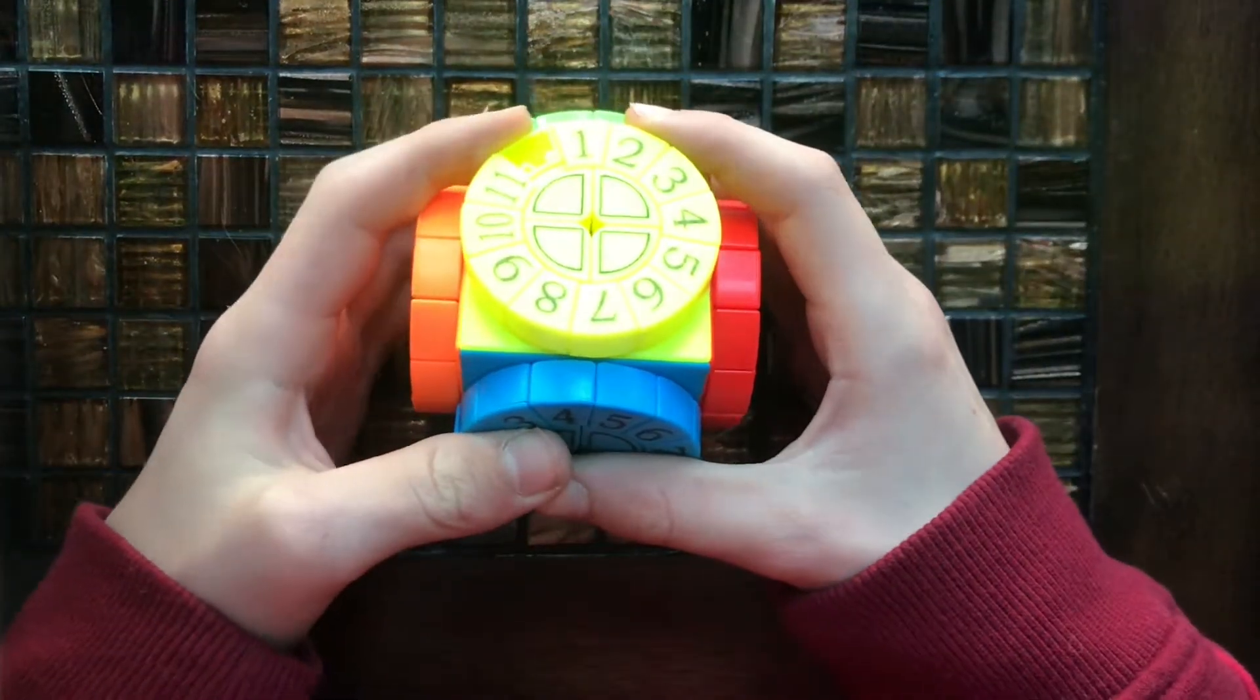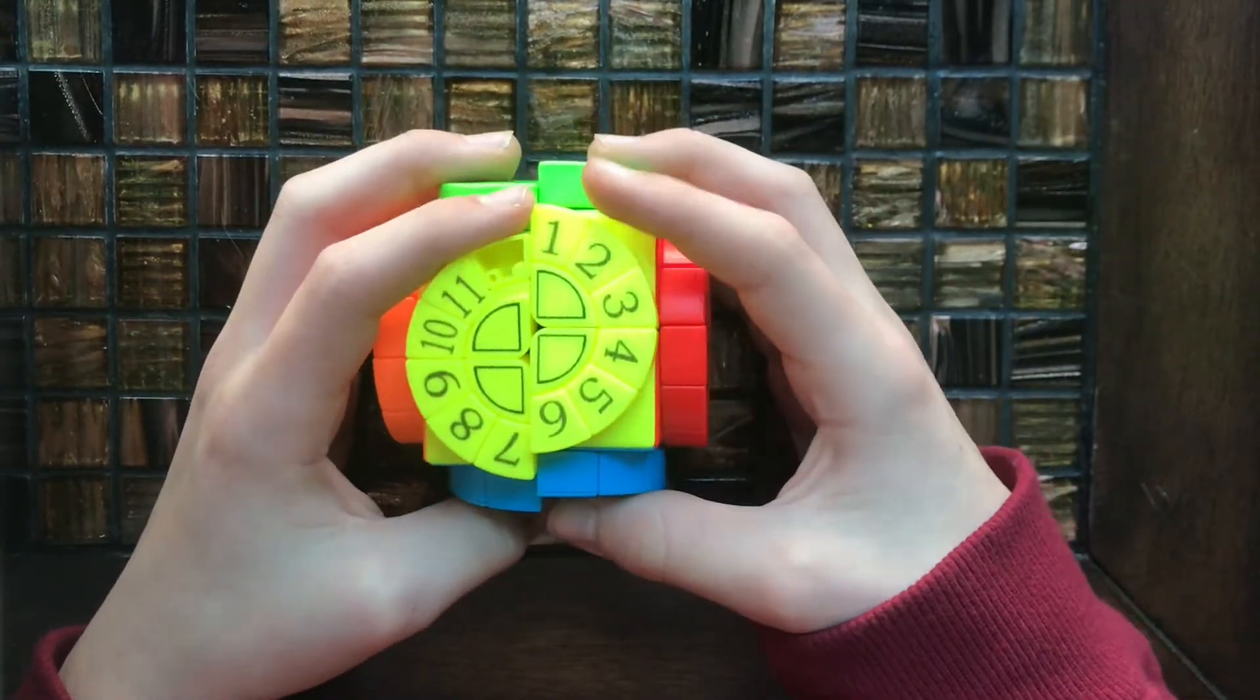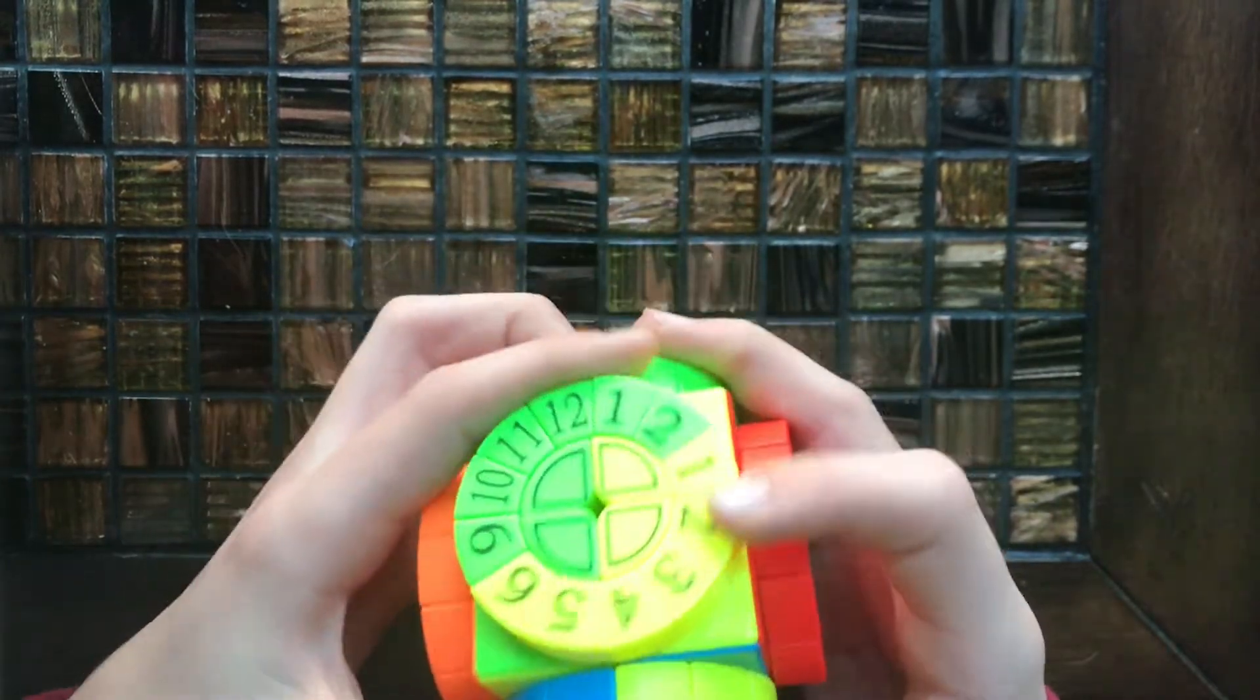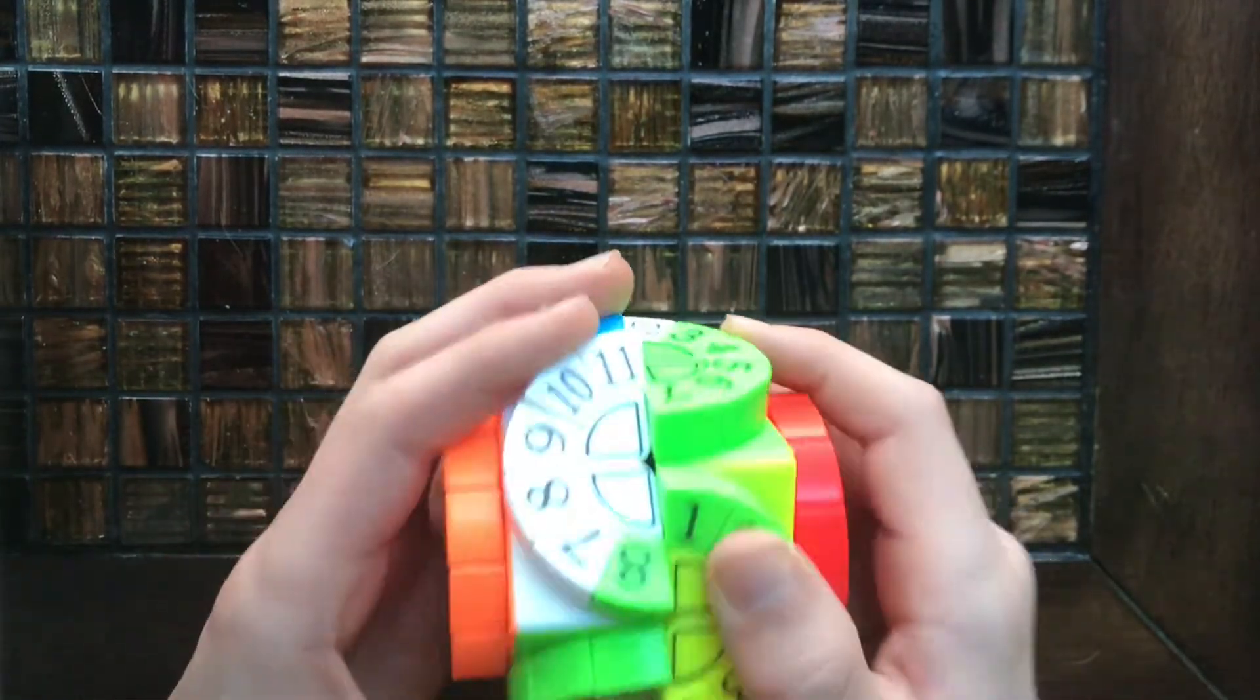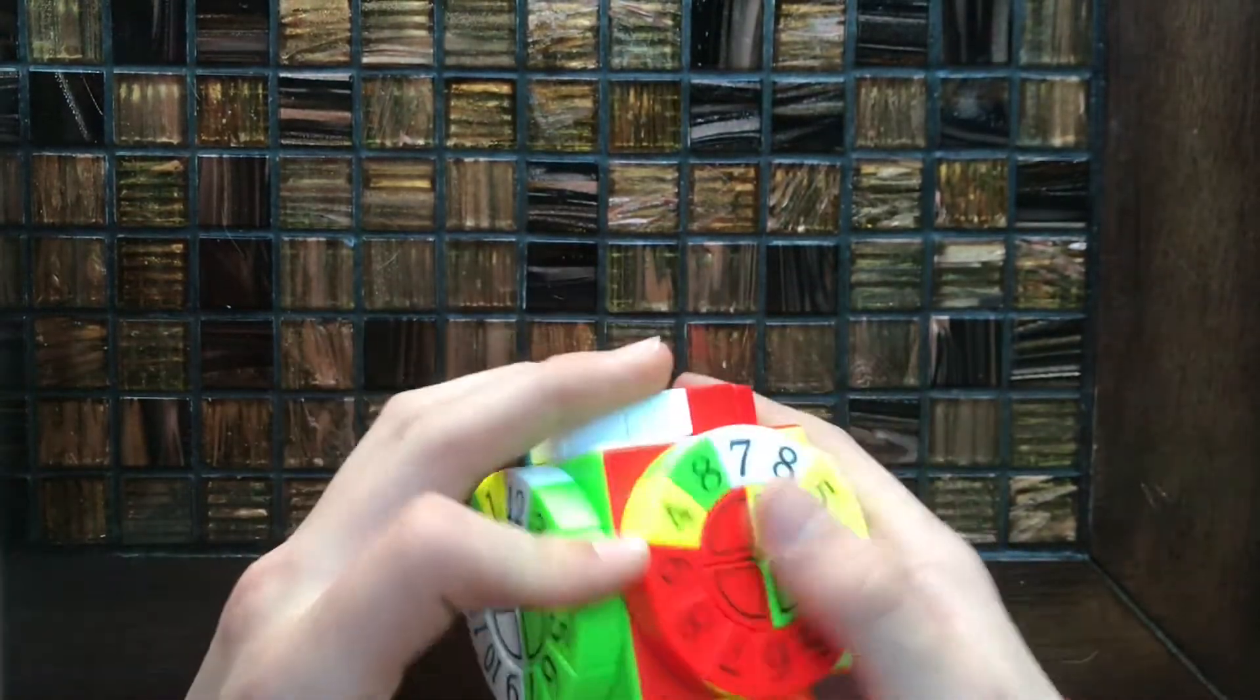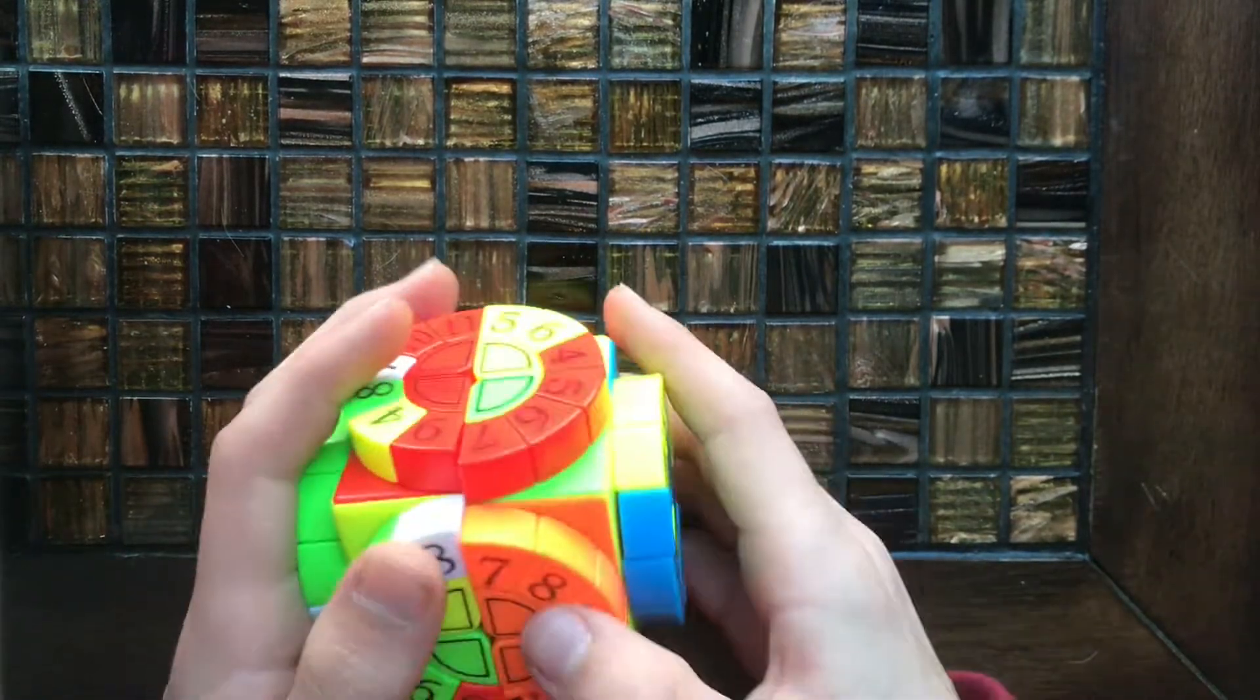So I'm going to be solving the 2x2 time machine next, so I think I'll just get into scrambling it. This cube is a lot like the pentacle cube, if you were trying to compare it to something. And it's really difficult sometimes, and I can't always solve it, so we'll see how we do today.